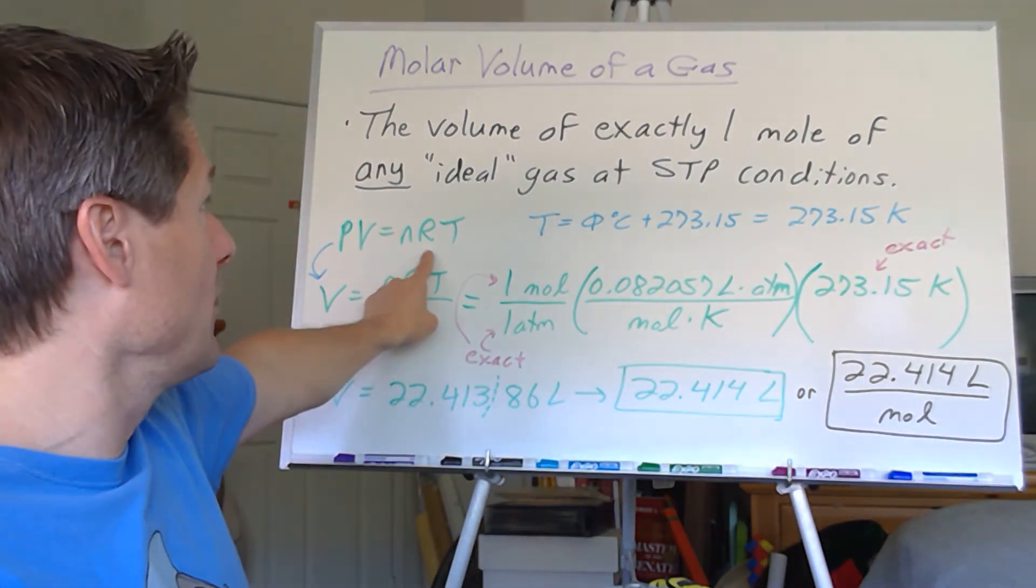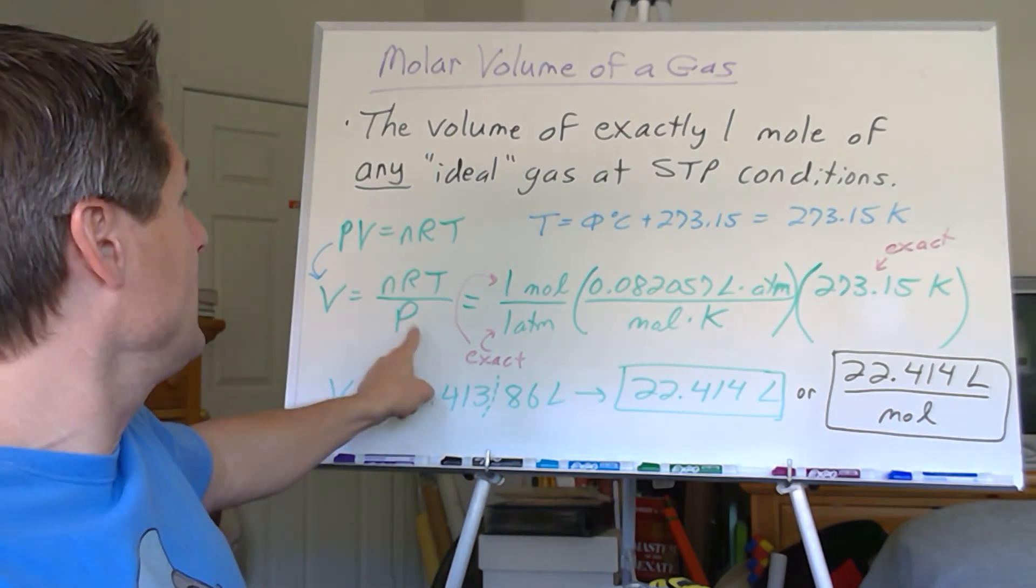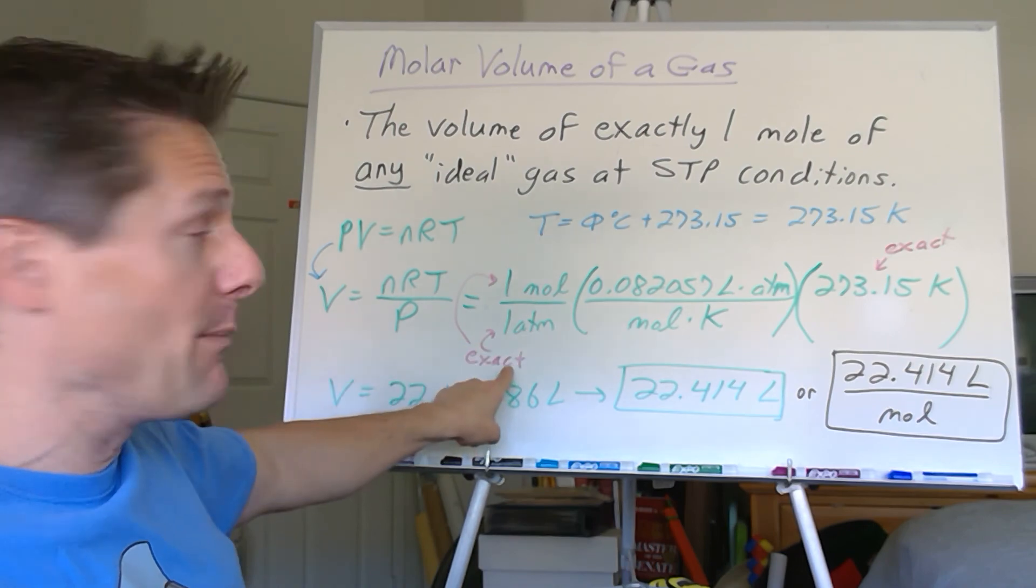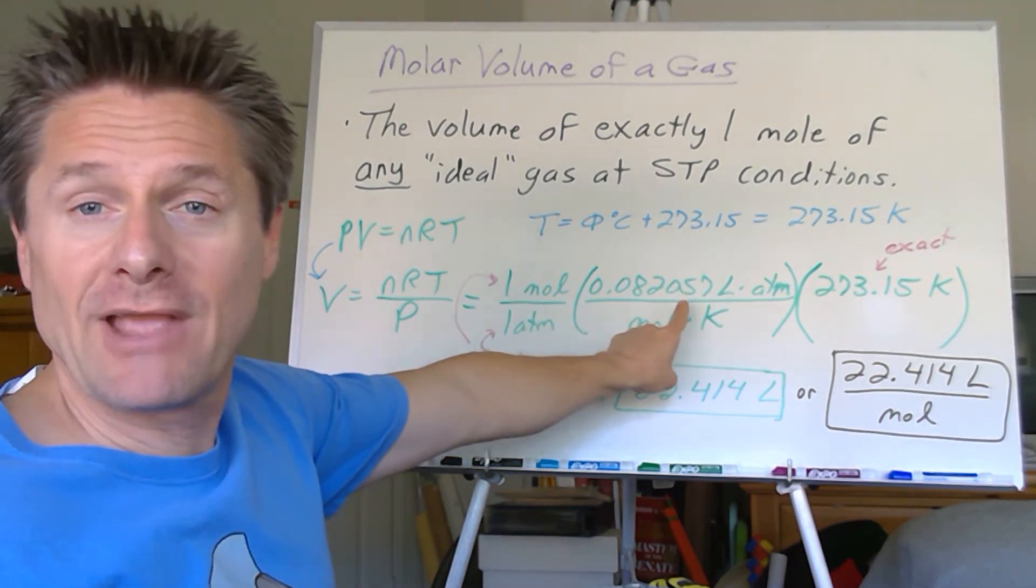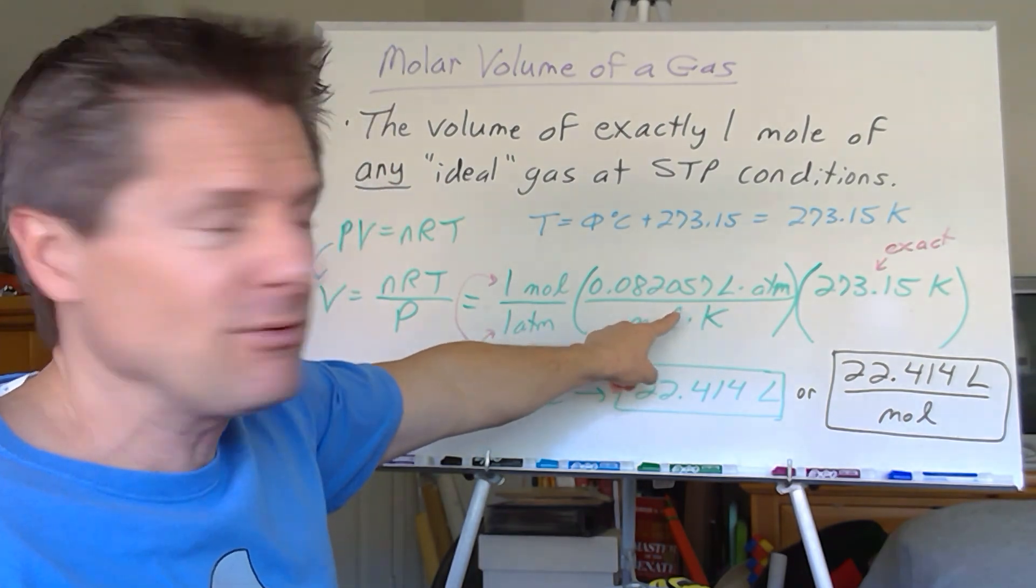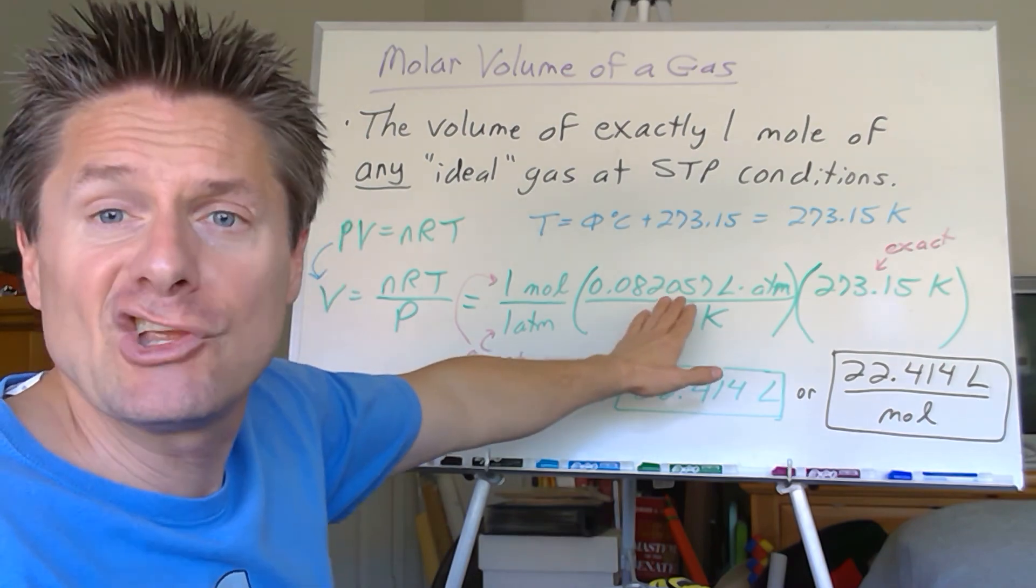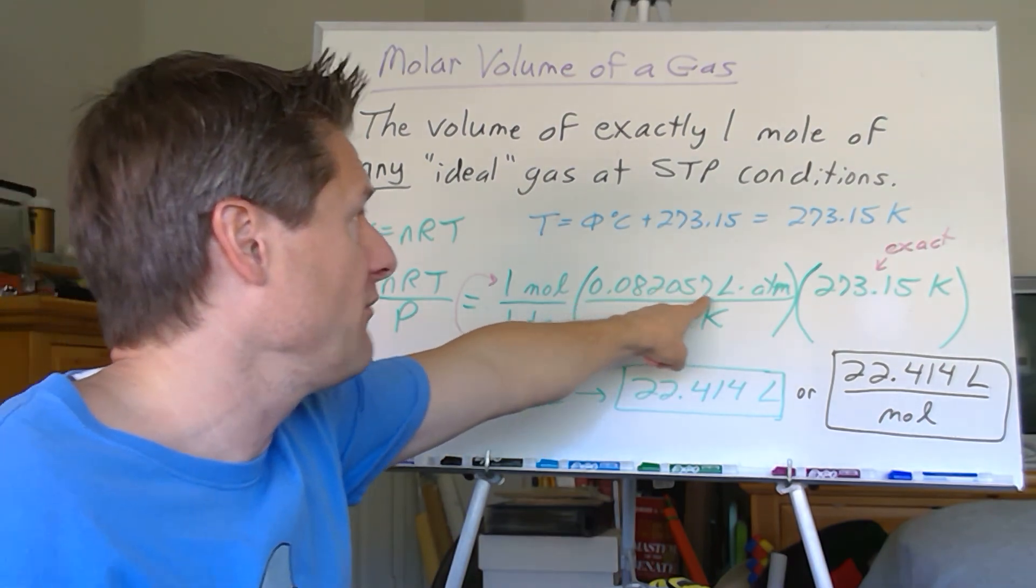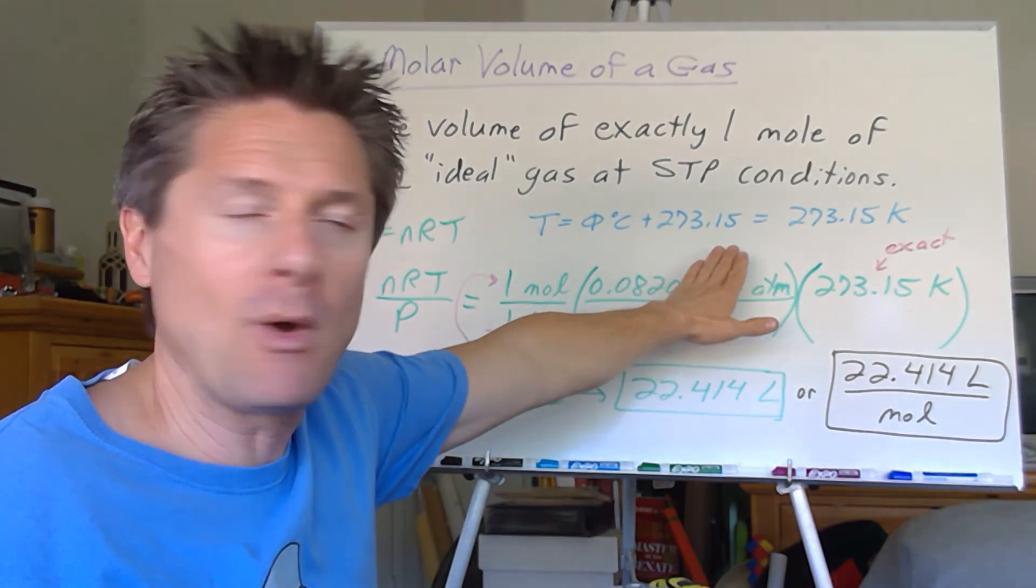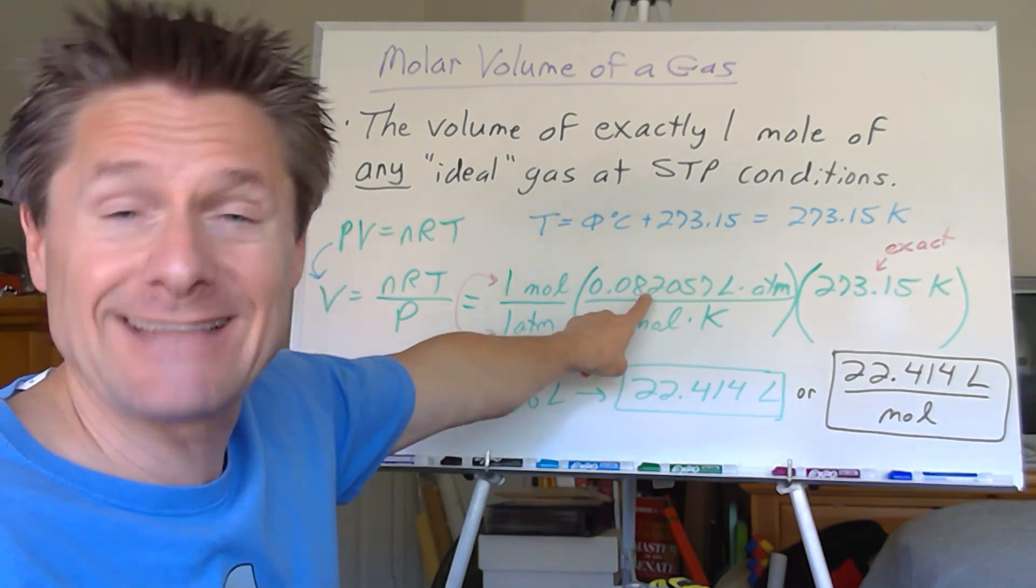It's non-changing conditions, so we're using the ideal gas equation, PV equals NRT. Isolate your variable, so volume would be NRT over P. Plug in one mole exactly, divide by the pressure one atmosphere exactly. Multiply by the universal gas constant, 0.082057 liters atmospheres per mole Kelvin, and the temperature is zero degrees Celsius, but we need it in Kelvin, so 273.15 Kelvin. That's exact as well.